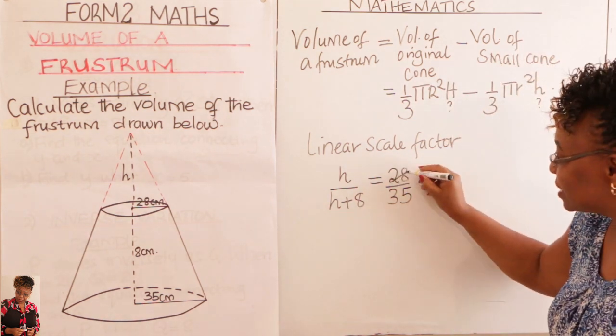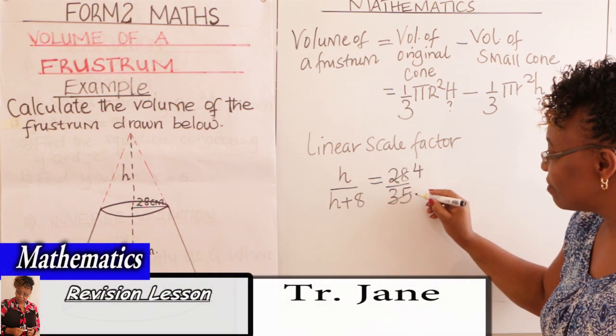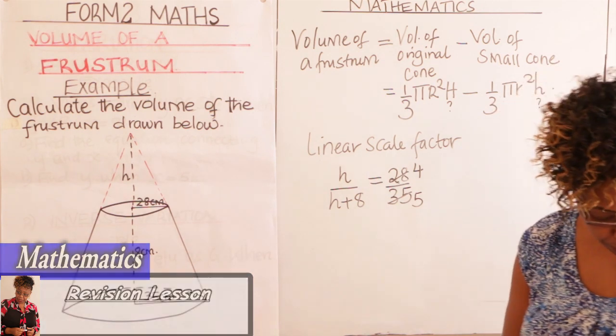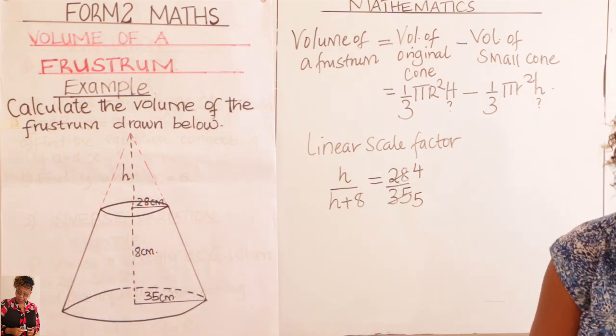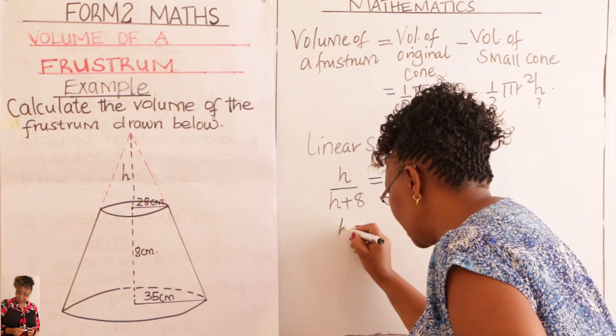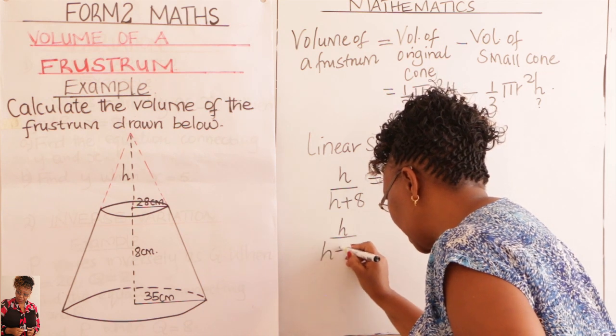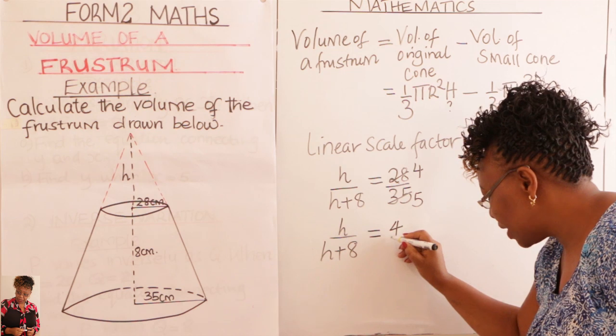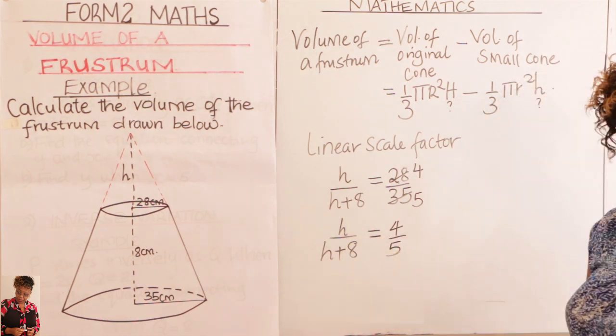Work out this line. By 7, 4. By 7, 5. You simplify. So small h over h plus 8 should therefore give you 4 over 5. Yes? Cross multiply.